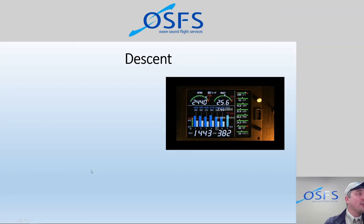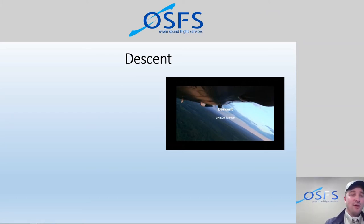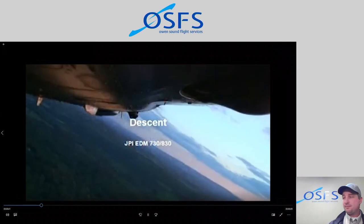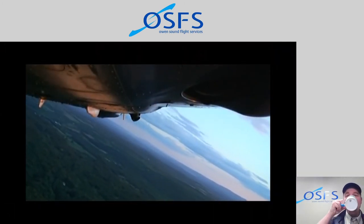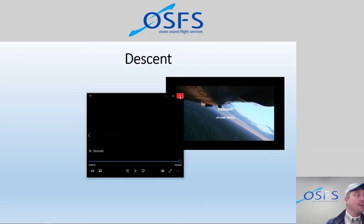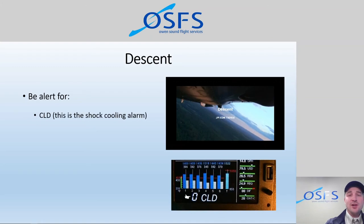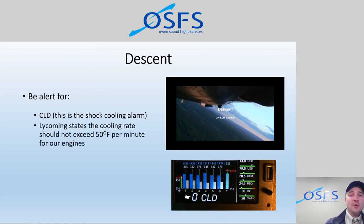In the descent, we've got some cool stuff with shock cooling. Lycoming has some recommendations for shock cooling — this is the rate of change of temperature in Fahrenheit per minute. In descent, manually select the shock cooling display to track it during your letdown. Rates of up to 50 degrees per minute are to be expected depending on your engine's configuration. We can watch how fast the coolest cylinder is cooling — it's essentially a shock cooling alarm. Lycoming says that we should not exceed 50 Fahrenheit per minute for our engines.